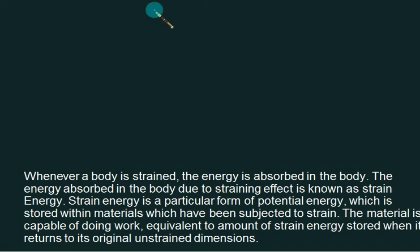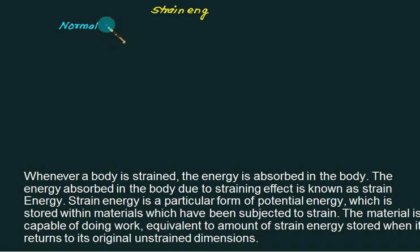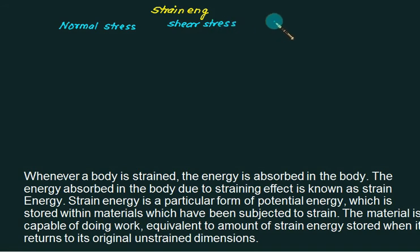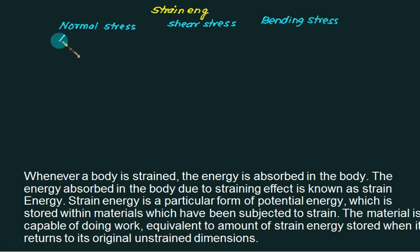We will start with the strain energy. Normally we have three types of stresses: one is the normal stress, second is the shear stress, and third is bending stress. Initially we will introduce how to develop the equation for strain energy for normal stress, shear stress, and bending stress. Once we finish this, we will develop the equation for axial loading, which normally develops the normal stress.